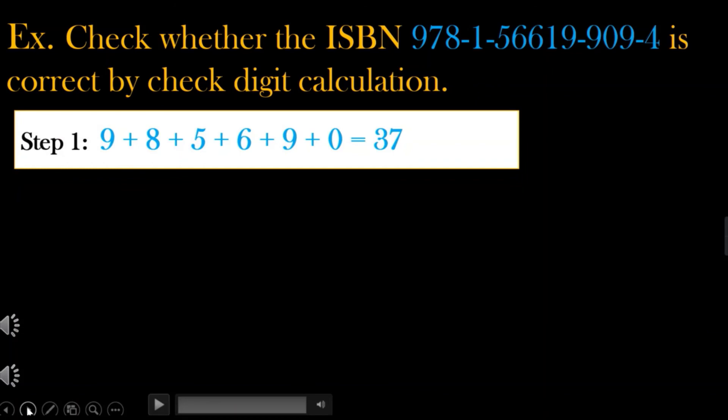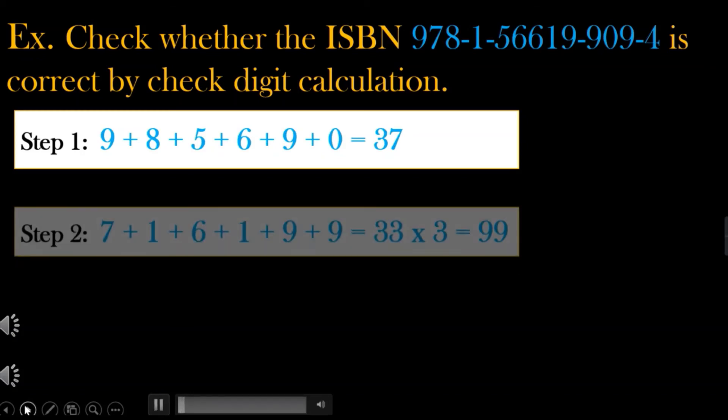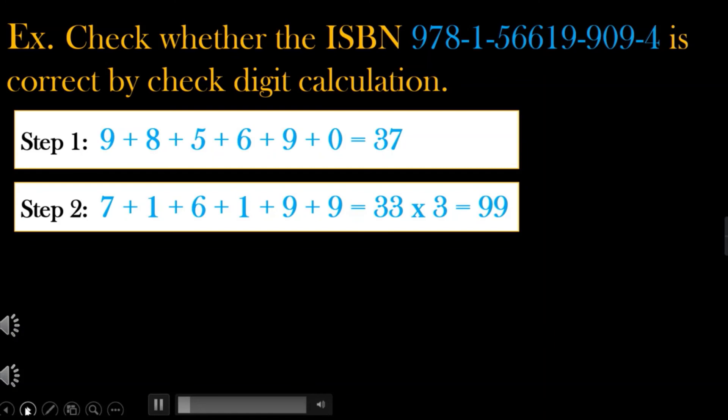Step 1: Adding the odd digits, we have 9 plus 8 plus 5 plus 6 plus 9 plus 0. The result is 37. Step 2: Adding all the even digits, we have 7 plus 1 plus 6 plus 1 plus 9 plus 9. The sum of these numbers is 33. Multiplying 33 by 3, we get 99.